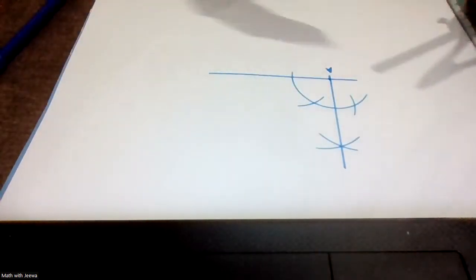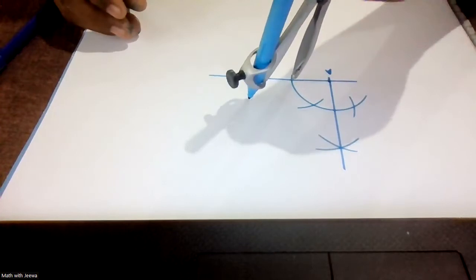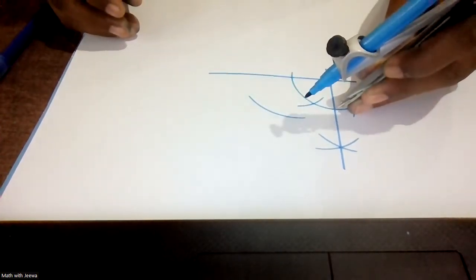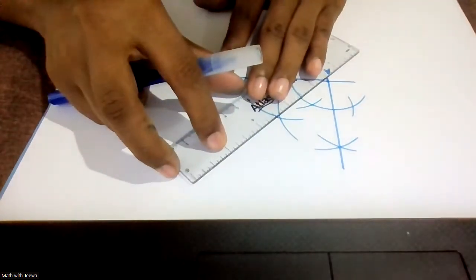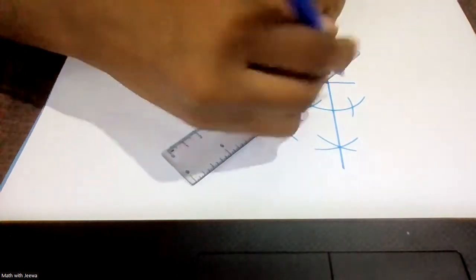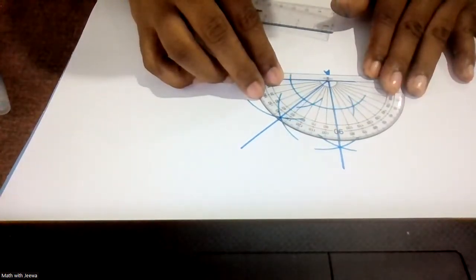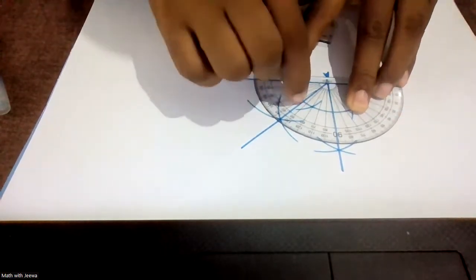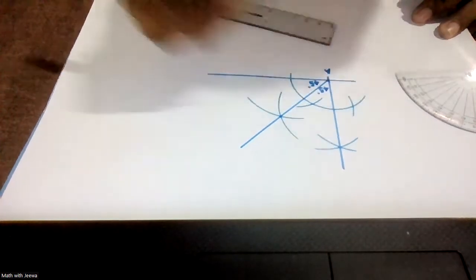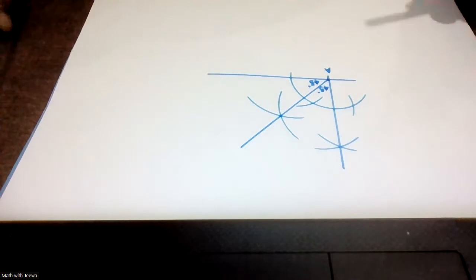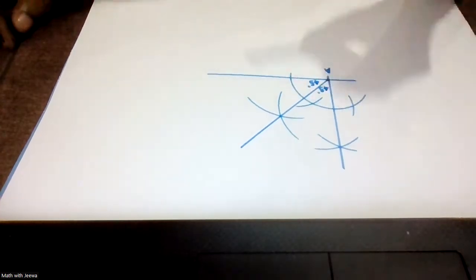Now I'm going to construct 45 degrees. To have 45 degrees, I bisect 90 degrees. Come to this point and draw the bisecting arcs. Take the protractor and measure — you can see it is 45 and 45. So I write 45 and 45. We've learned how to construct 90 degrees and how to bisect it to get 45 degrees.